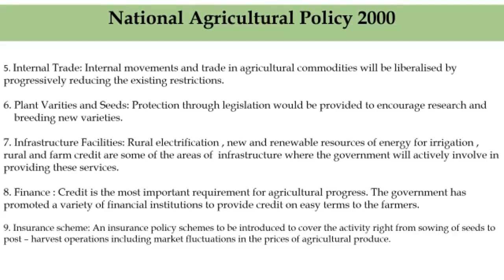The sixth feature is plant varieties and seeds. Protection through legislation would be provided to encourage research and breeding of new varieties. The government would enact appropriate legislation for this purpose, as it is necessary to protect poor farmers from exploitation by multinationals through their patent rights. Other areas that require encouragement for development are animal husbandry, poultry, dairy, and aquaculture.